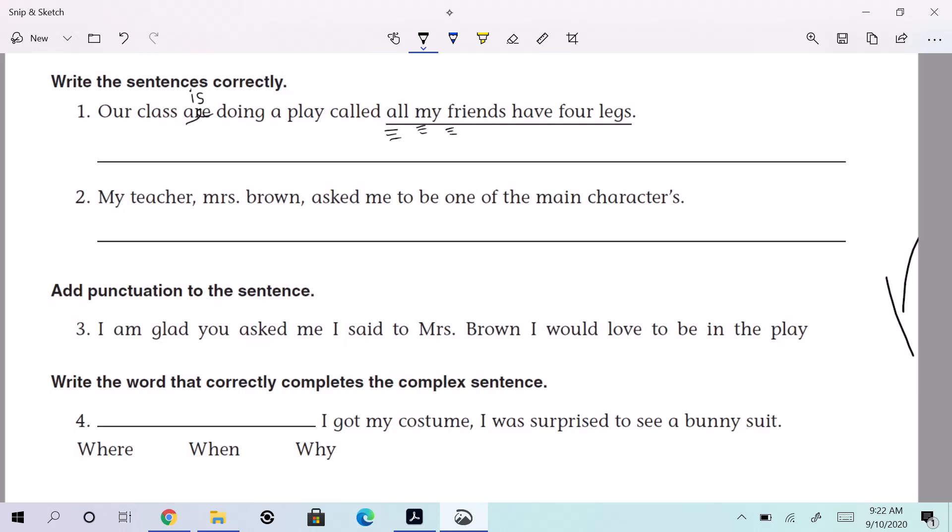We do three lines under letters that we know need capitalized. Are you seeing this? Are you doing it? That's the bigger question. Our class is doing a play called All My Friends Have Four Legs. So we have one, two, three, four, five, six, and a seven.